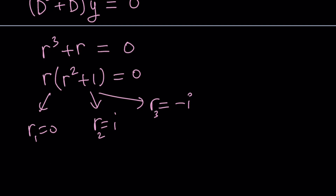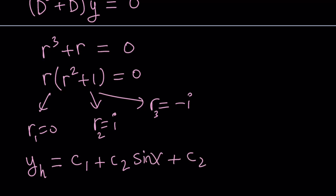Since r sub one is zero, e to the power zero is one, so we just get a constant. The homogeneous solution is c sub one times one plus c sub two sine x plus c sub three cosine x, where c sub one, c sub two, and c sub three are real constants. But this is just part of the solution — now we need to find a particular solution and put the two together.